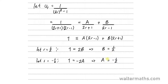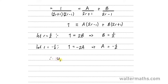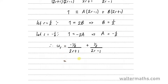Now that we have A equals negative one-half and B equals one-half, substituting into the partial fraction form gives U sub R equal to (−1/2) over (2R+1) plus (1/2) over (2R−1). Factoring out one-half, this becomes U sub R equals one-half times [1/(2R−1) minus 1/(2R+1)].